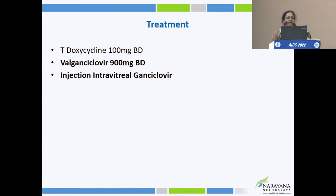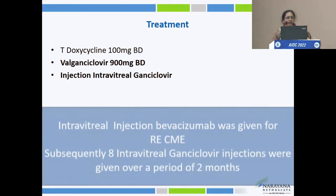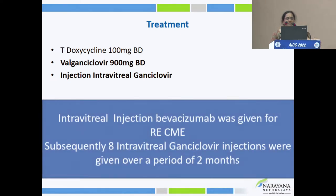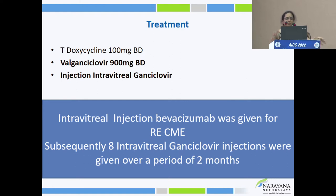We added systemic valganciclovir and the patient received intravitreal ganciclovir 2000 micrograms in 0.1 ml, along with intravitreal bevacizumab in view of CMV. The patient received a total of 8 intravitreal ganciclovir injections over a period of two months.